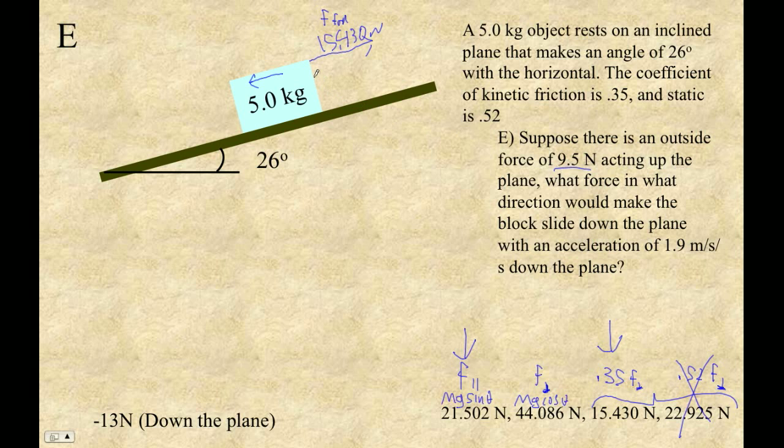What is that force? We just don't know. We've got 9.5 newtons up the plane. These are all positive. We've got the unknown force, which we always promise to make positive. So we've got F. We don't know what it is. The parallel force is always acting down the plane. So 21.502, that's our force parallel, always down the plane. Sweet mama, look at this.